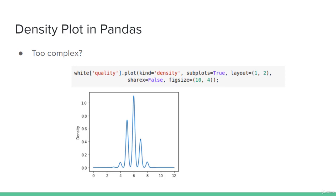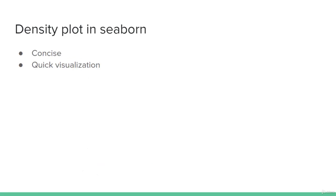If we want to visualize a density plot, matplotlib becomes quite difficult, so we use pandas instead. In pandas, we call the plot function, specify the kind parameter, set subplots to True, and use layout to define the plot size within the canvas. The figsize parameter specifies the total canvas size for multiple subplots. For now, we are only visualizing one feature.